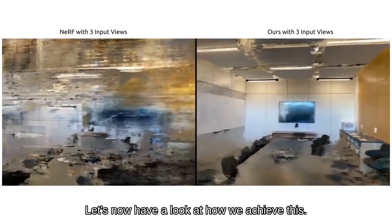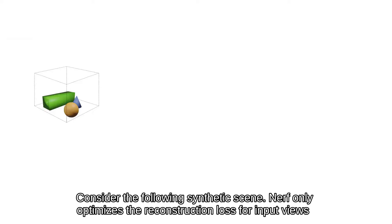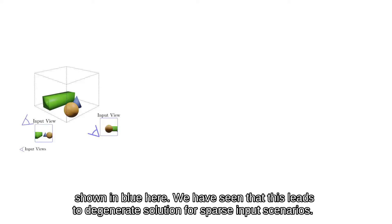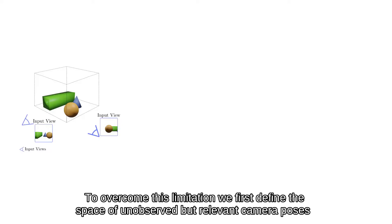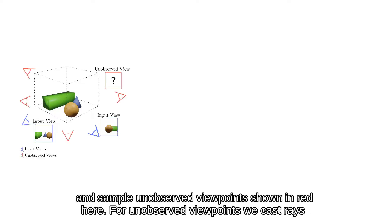Let's now have a look at how we achieve this. Consider the following synthetic scene. NeRF only optimizes the reconstruction loss for input views shown in blue here. We have seen that this leads to degenerate solutions for sparse input scenarios. To overcome this limitation, we first define the space of unobserved but relevant camera poses and sample unobserved viewpoints shown in red here.